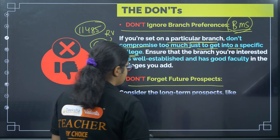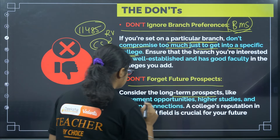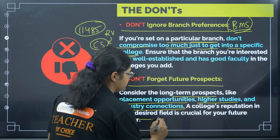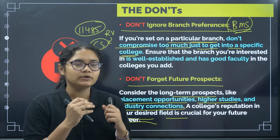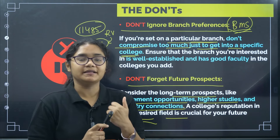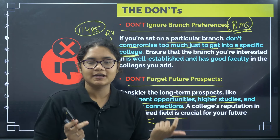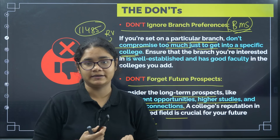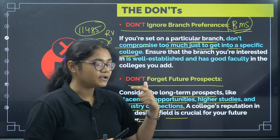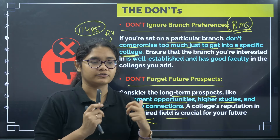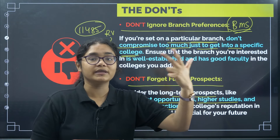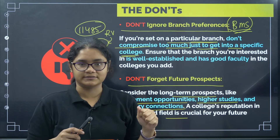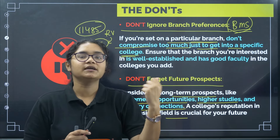The fourth don't: don't forget future prospects. Consider the long-term prospects like placement opportunities, higher studies, and industry connections. A college's reputation in your desired field is crucial for your future career. Don't get attracted only by the infrastructure, the fests, or the facilities. Think in terms of your career — what is the placement record, what internship opportunities are available, what is the industrial exposure, where are the current students placed, and where have alumni gone for higher studies. Your consideration should be based on these factors.